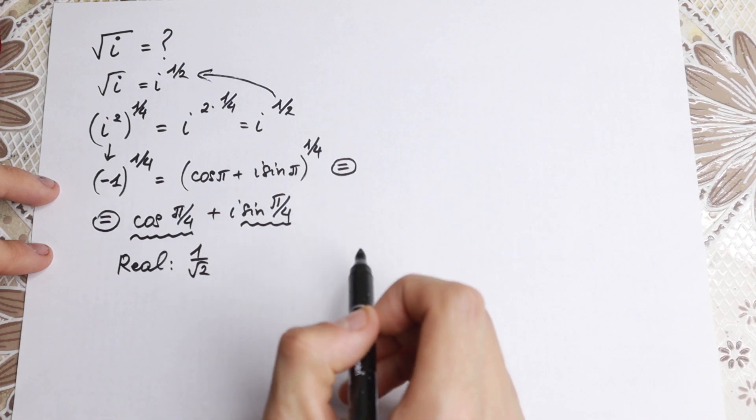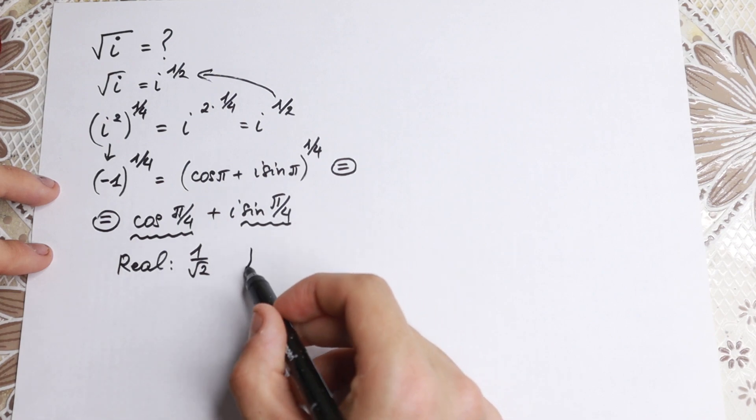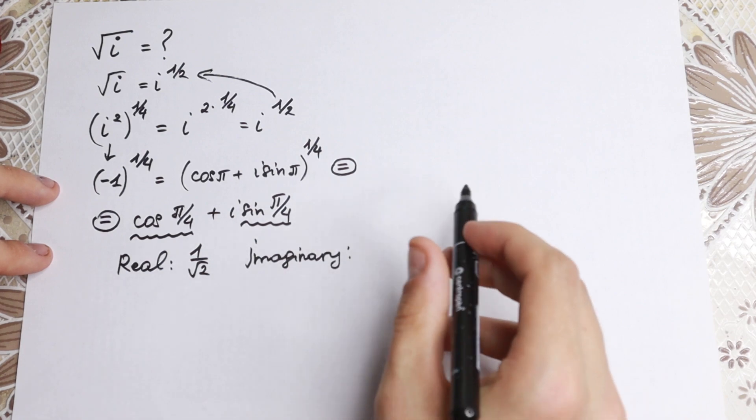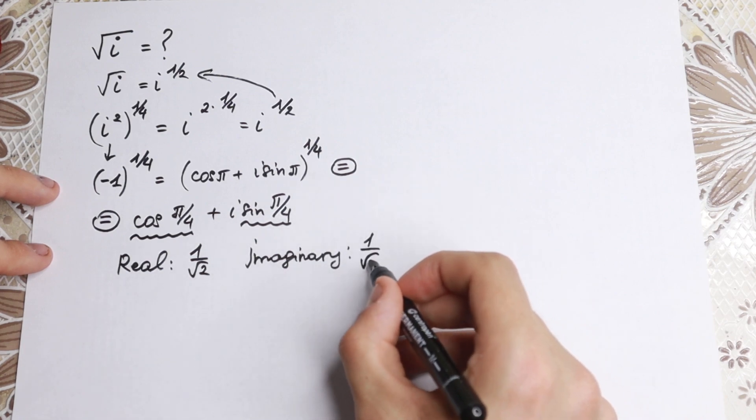And sine π over four is the imaginary part. Sine π over four is also equal to one over the square root of two.